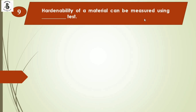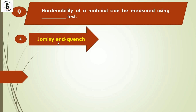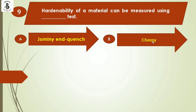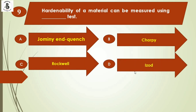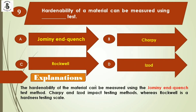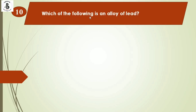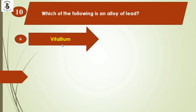Question 9: Hardenability of material can be measured using which test? Option A: Jominy quench test, Option B: Charpy, Option C: Rockwell, Option D: Izod. Hardenability is measured using the Jominy quench test method. Charpy and Izod are impact testing methods, while Rockwell is a hardness testing scale. For hardenability measurement, the Jominy quench test is required. The right answer is Option A.